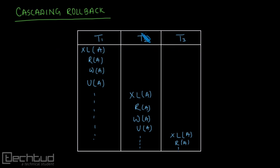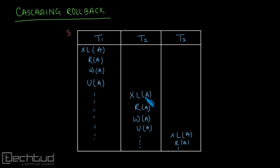Now let's see the third problem: cascading rollback. In this example we have three transactions making a schedule S. First, transaction T1 acquires an exclusive lock on variable A, reads A, writes A, and then unlocks A. When T1 unlocks A, transaction T2 acquires a lock on A, reads A, writes A, and then unlocks A.